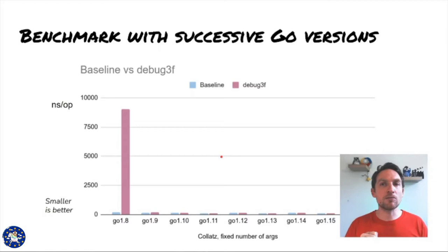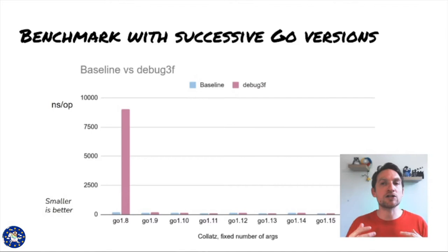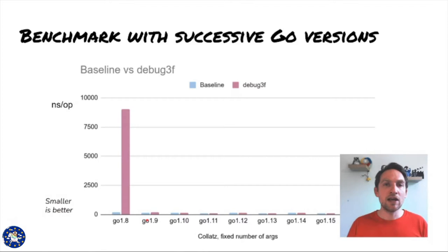We can see a huge outlier in Go 1.8, which was not able yet to optimize out my debugf as a no-op. The compiler generated a function call. The function was indeed called at runtime at each computation step, and this dominated the total computation time. In all subsequent versions of Go, the inlining kicked in. Let's ignore Go 1.8 for now and zoom in.